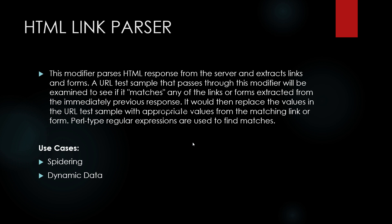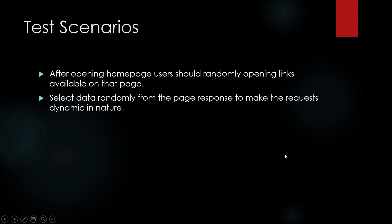So you don't need to provide any external CSV in that case. For example, if you are opening a home page and you want the user to randomly open different links available on that page, you can achieve this using the HTML Link Parser. Secondly, if there are two dropdowns each with multiple data values and you need to select random values from the dropdowns to create a combination of new data every time.